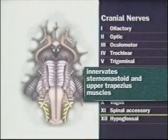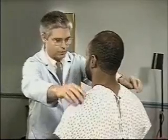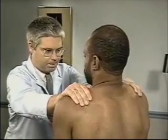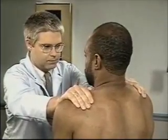Cranial nerve 11, the spinal accessory nerve, innervates the sternomastoid and upper trapezius muscles. Ask the patient to shrug his shoulders upward against your hands and evaluate the strength and contraction of the trapezius muscles. Then ask the patient to turn his head to each side against your hand, observing the contraction of the opposite sternomastoid muscle and noting the force of movement.